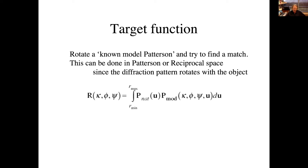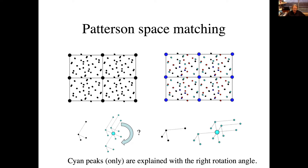That's the mathematical definition of finding the proper rotation. Suppose the previously known structure has your motif but at a different angle — you rotate it through all possible orientations and calculate how many vectors are explained for a given rotation. Here's what the map looks like for the right answer: if I rotate it to the correct position, the cyan Patterson peaks shown here on the full map overlap the actual peaks in the experimental Patterson map for the unknown quite well. So at the proper rotation you explain a large number of the Patterson peaks.